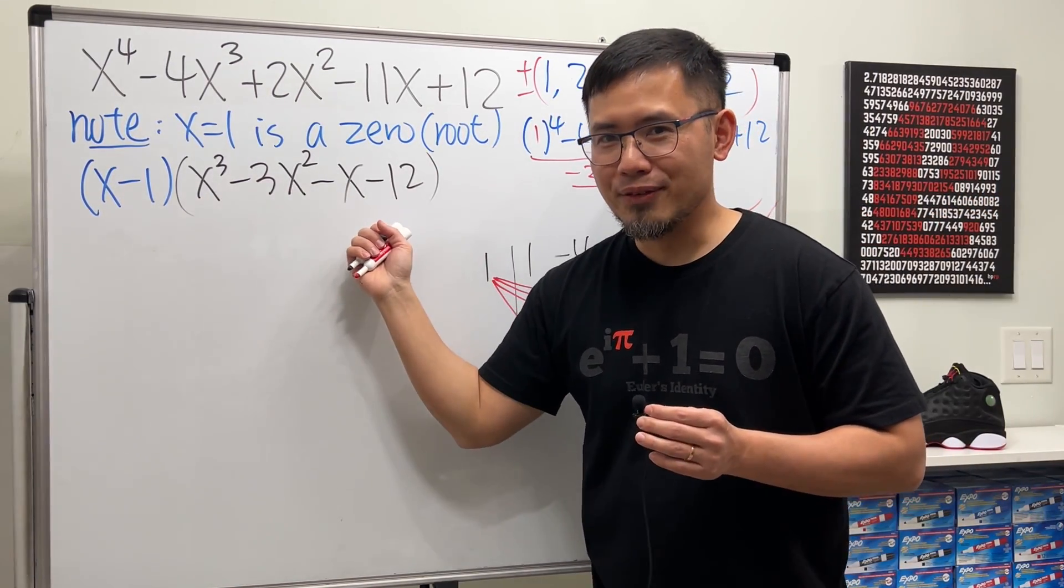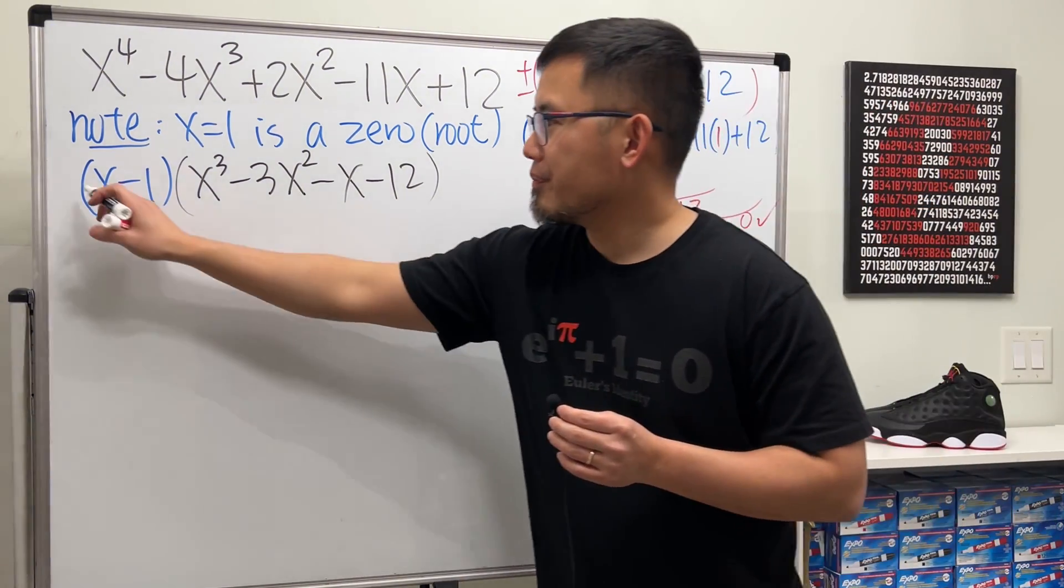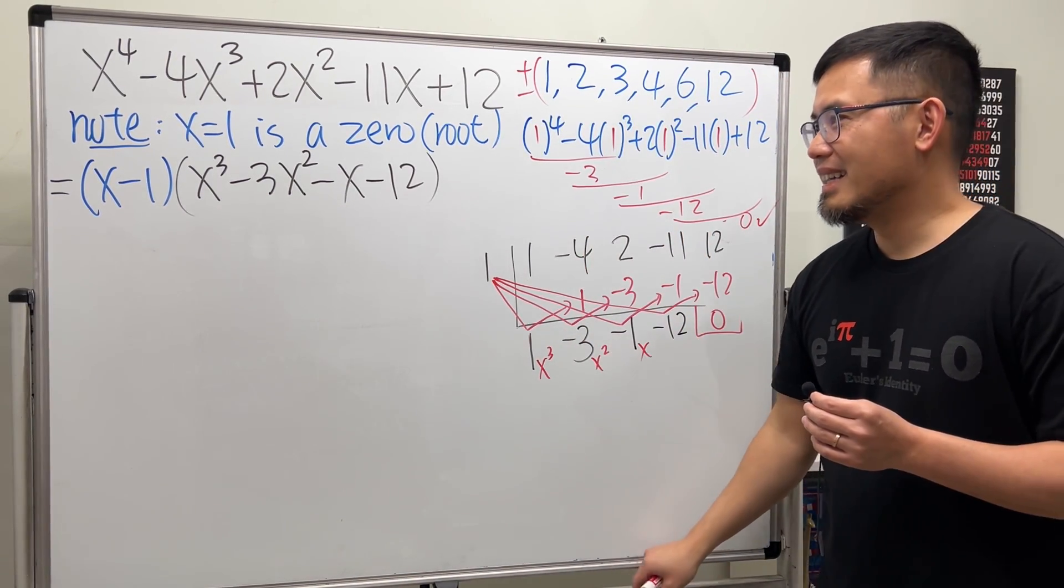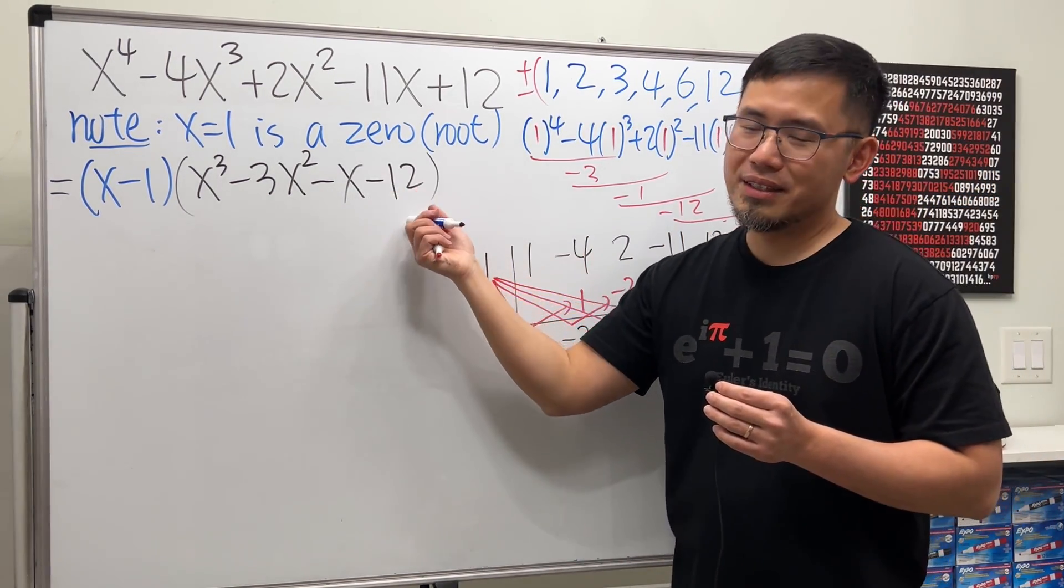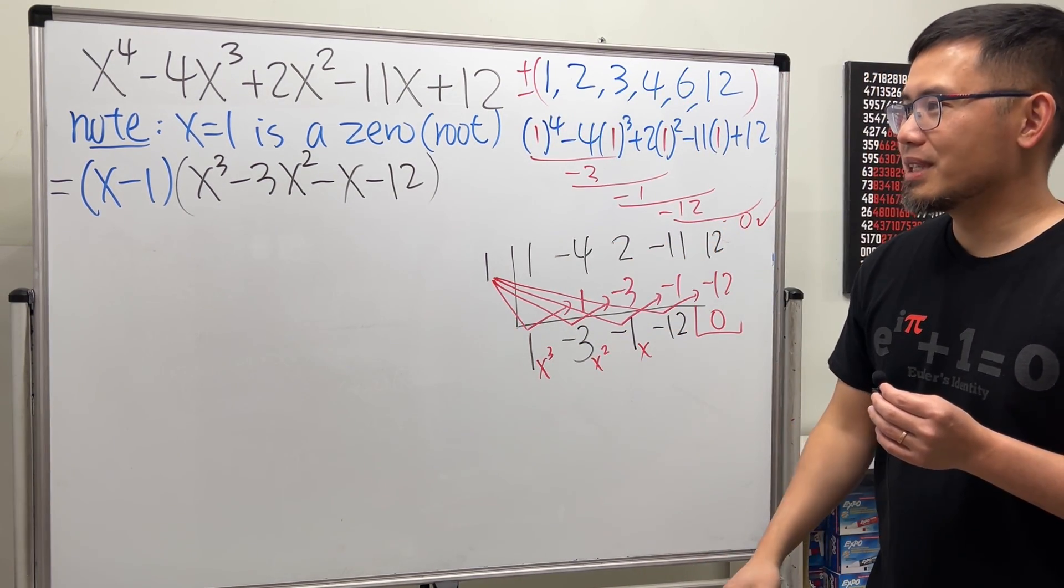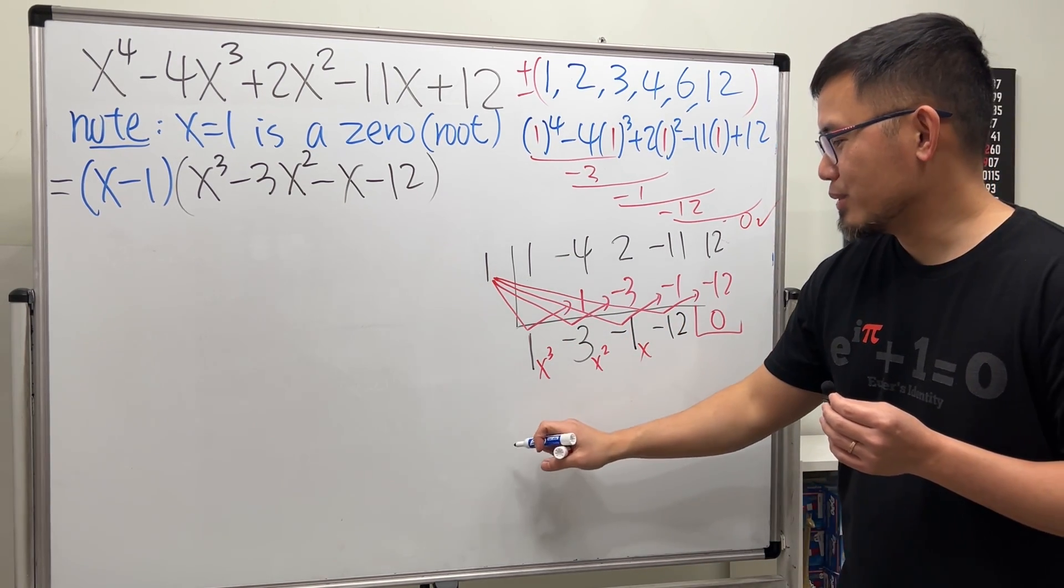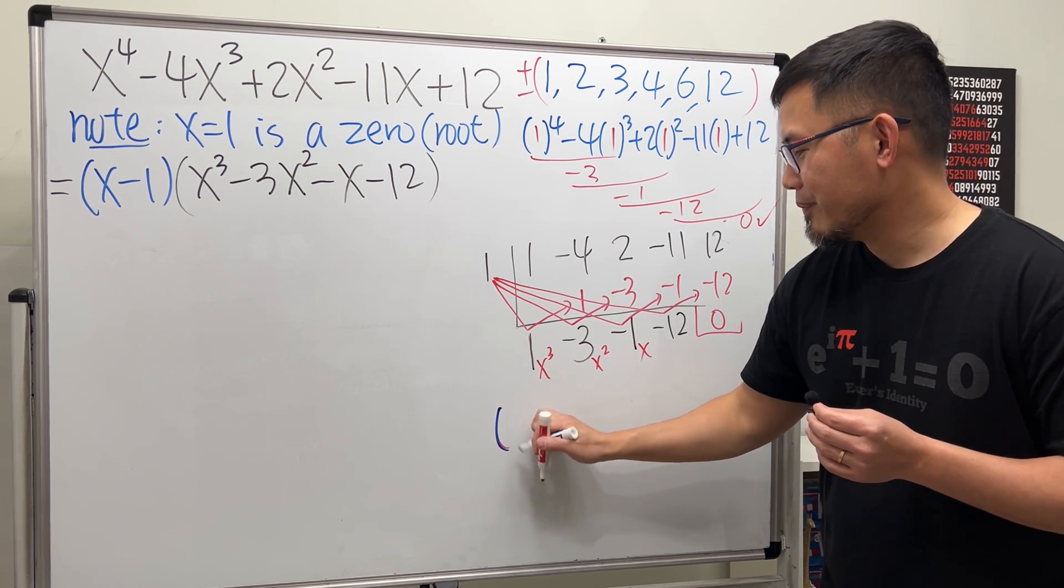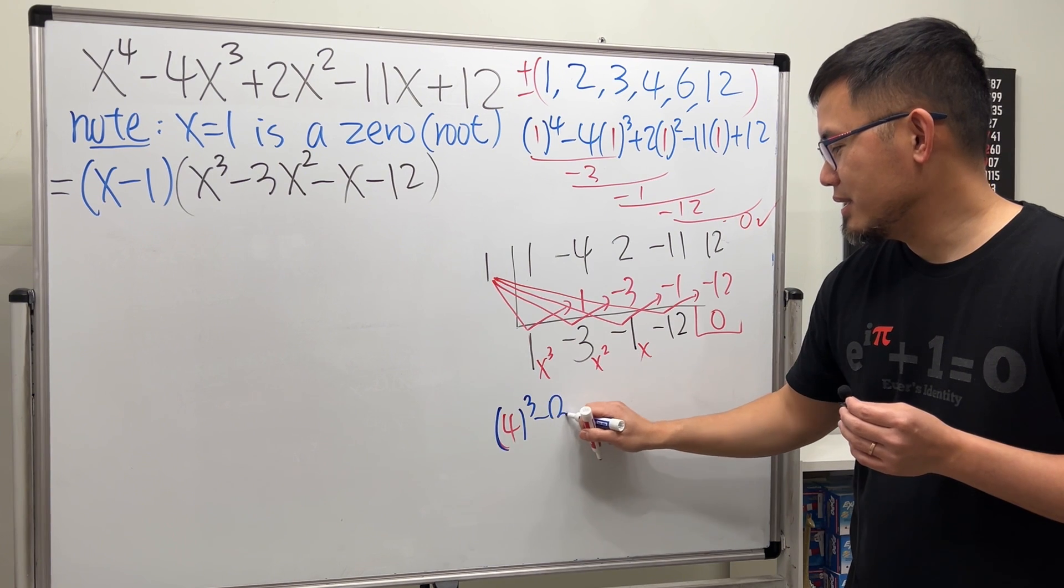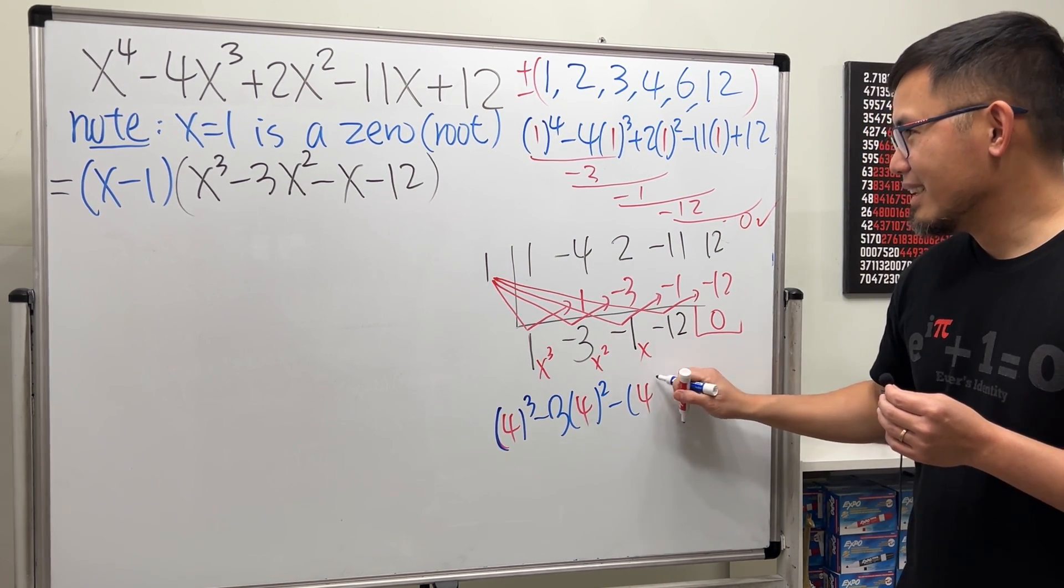Yep, now we have to focus on how we can factor a four-term polynomial. To do so we are just going to use the rational zero theorem again. We have negative 12, so you can try again. I will just tell you guys that 4 is a root for this right here, so I'm just going to show you guys real quick. So if we do 4 to the third power minus 3 times 4 to the second power minus 4 and then minus 12...